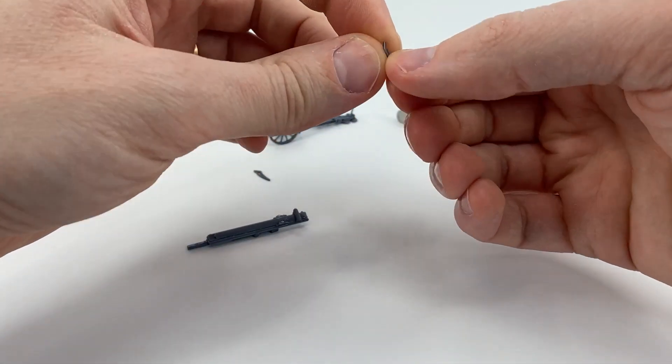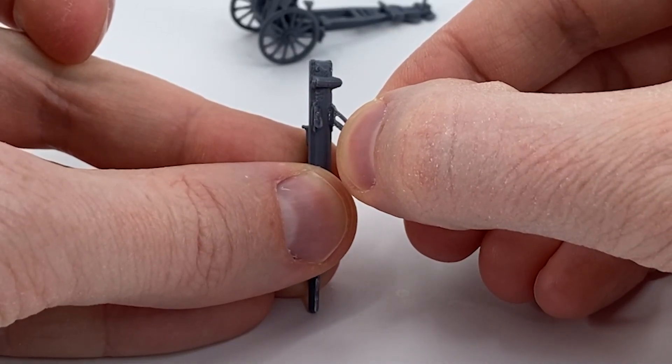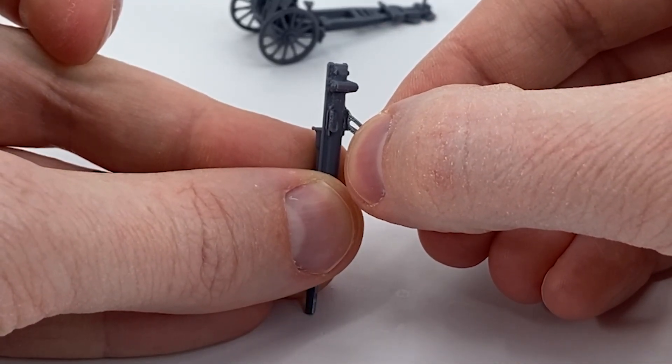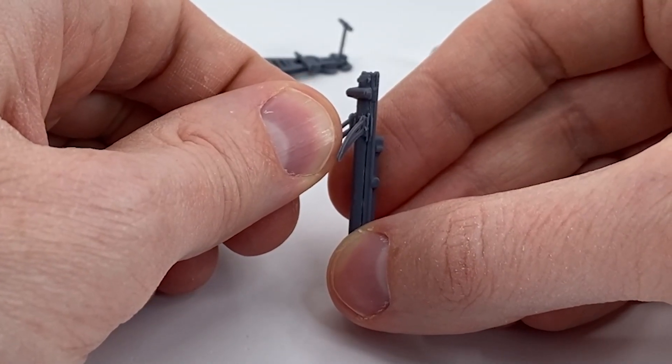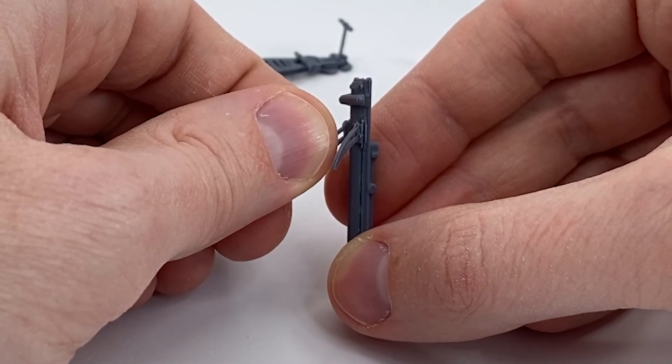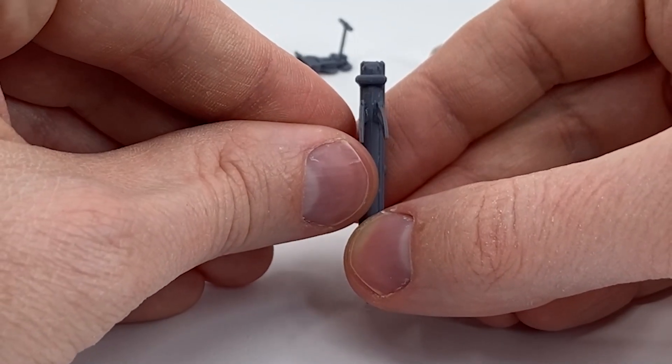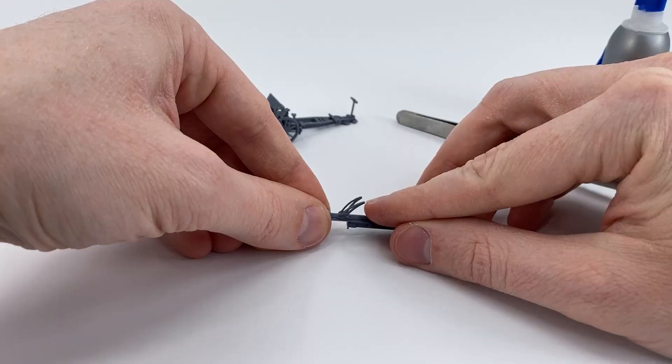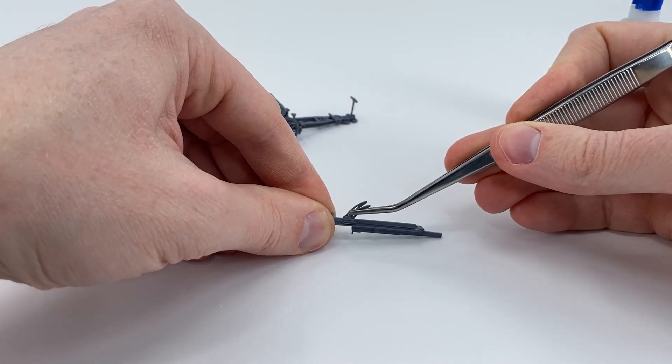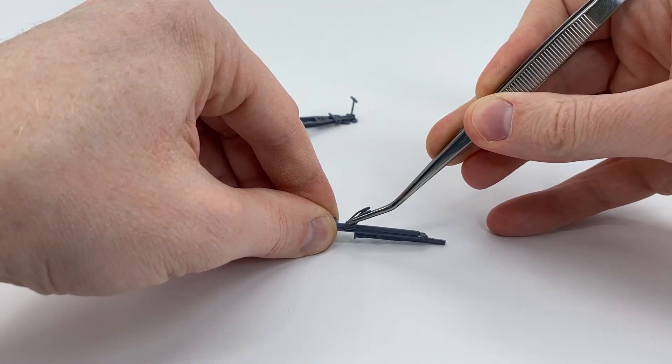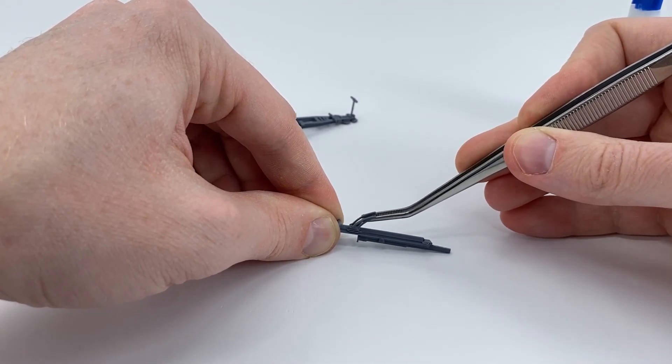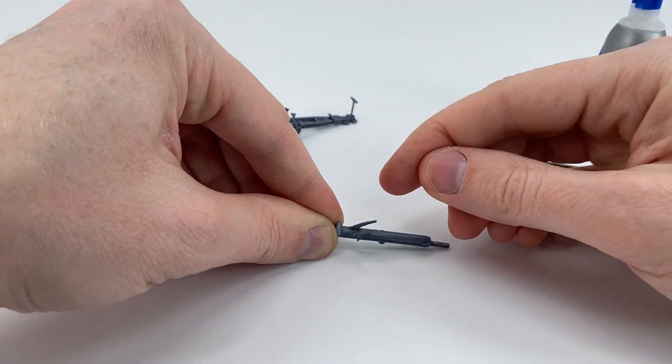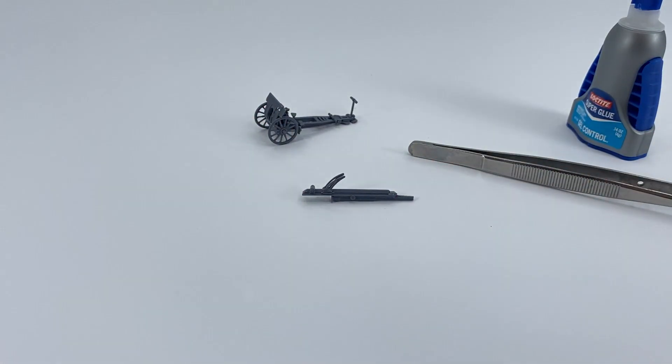Now this is going to be the tiny pieces, so be careful with this process. All right. So once you have those pieces in a good position, make sure that they're in a great spot like that. I recommend that you let that off to the side and just let that glue dry for a bit.